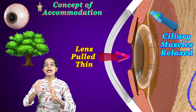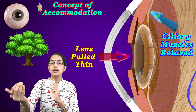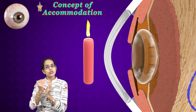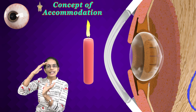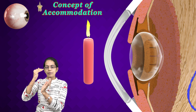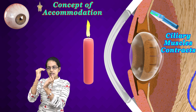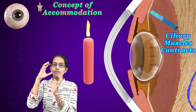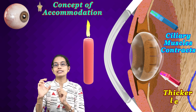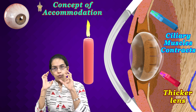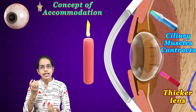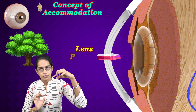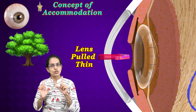This thin-lens state occurs when viewing a distant object. The opposite happens for near objects: when trying to see something close, the ciliary muscles constrict. The increased pressure tightens the ligaments, resulting in a thicker lens. So for near objects the lens is thicker, and for distant objects the lens becomes thin — this is the process of accommodation.